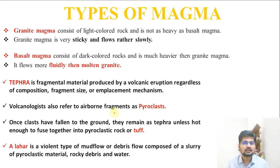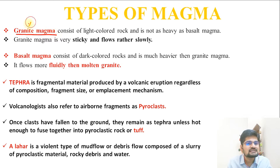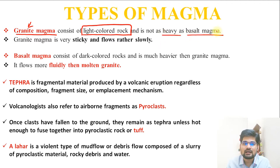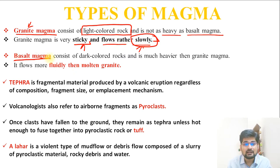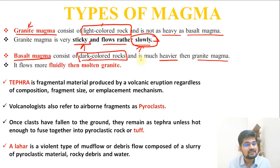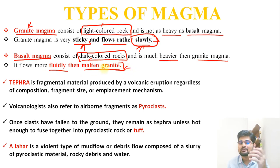The material that comes out is called magma. Granitic magma consists of light-colored rock, is sticky and viscous, and flows very slowly. Basaltic magma consists of dark-colored rocks, is much heavier, and flows more fluidly than granitic magma.